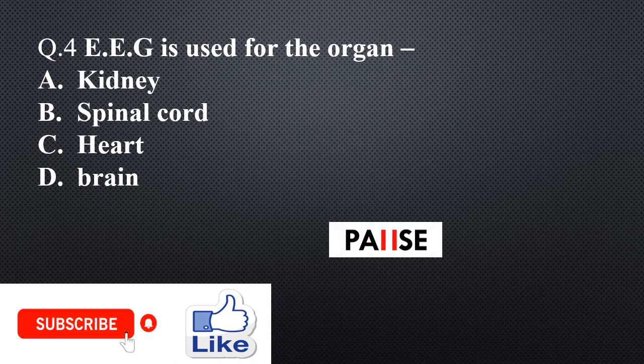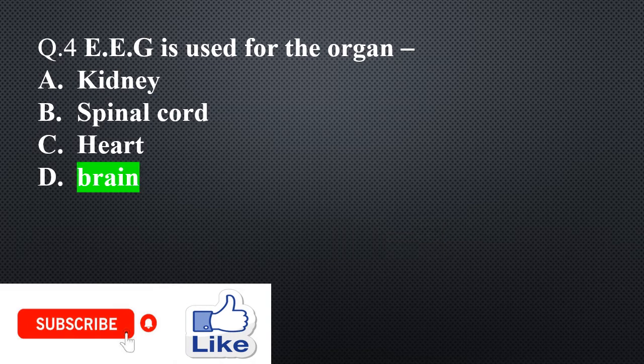Question 4. EEG is used for which organ? Option A: Kidney, Option B: Spinal cord, Option C: Heart, Option D: Brain. The right answer is Option D: Brain. So electroencephalogram is used for the organ brain.